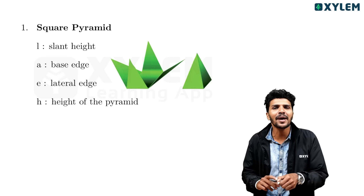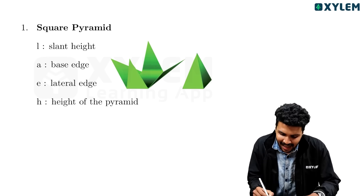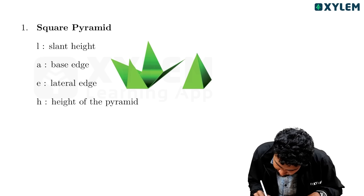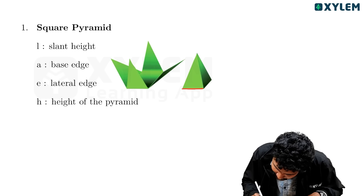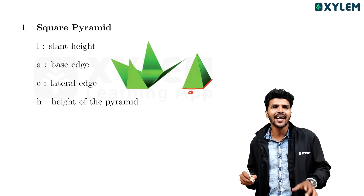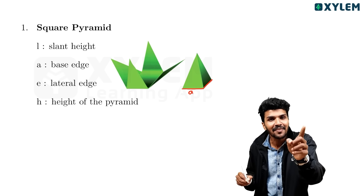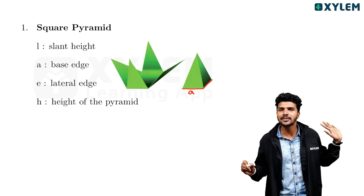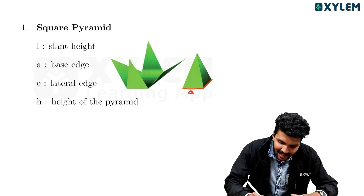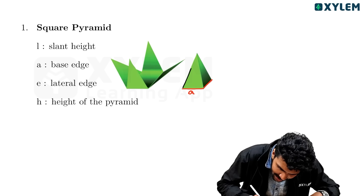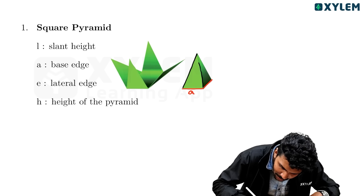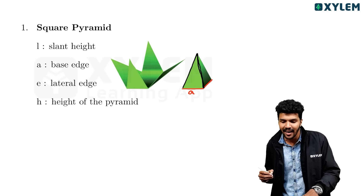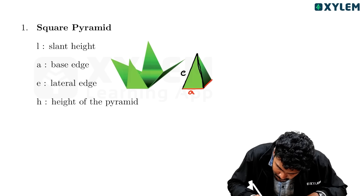We're going to talk about the square pyramid. The base is a square - the base is one square with side A. There are four equal parts, which are the same parts with equal sides.